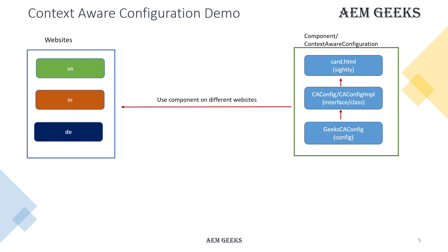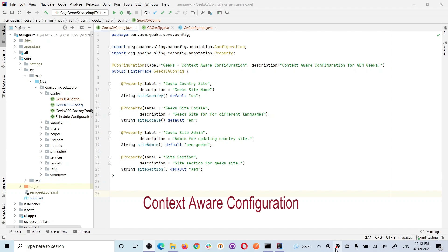Now let's understand the demo. I have a context-aware configuration and I call it in a component called Card. The values from the configuration will be displayed in the card component, and I'll use this component on different websites, different locale sites, and even different sections to show how easy it is.